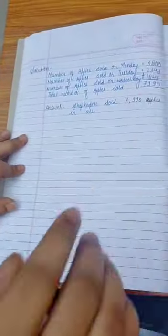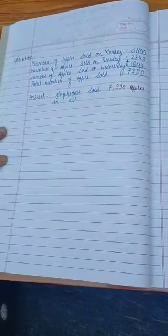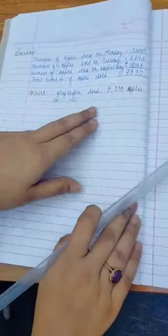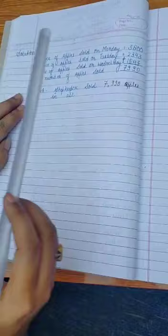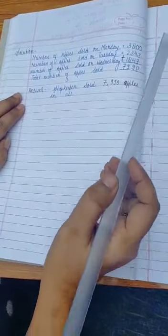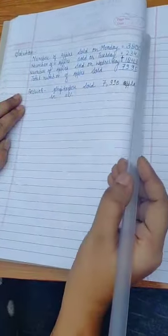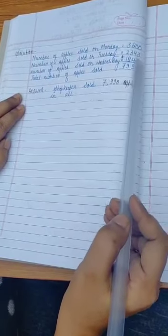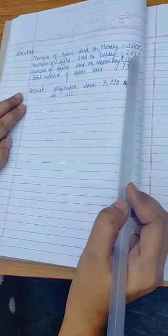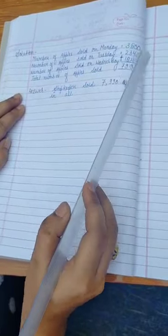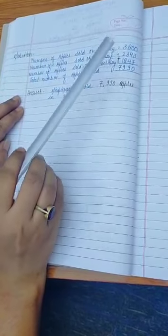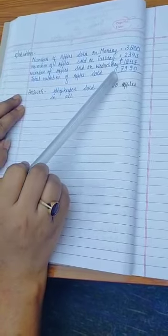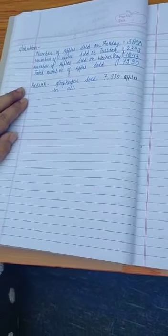Now let's add these numbers to get the answer. 0 plus 3 plus 7 equals 10, so write 0 and carry 1. 1 plus 4 is 5, 5 plus 4 is 9. Now 8 plus 3 is 11, and 11 plus 8 is 19, so write 9 and carry 1. 3 plus 1 is 4, 4 plus 2 is 6, and 6 plus 1 is 7. Write the answer in full statement.